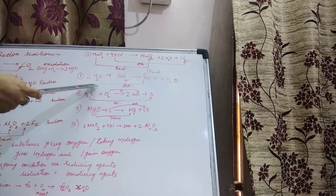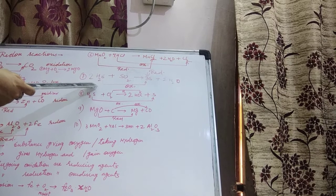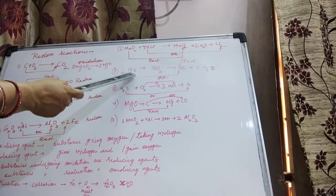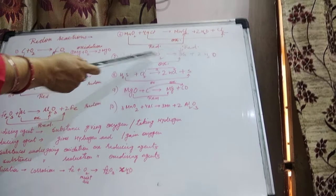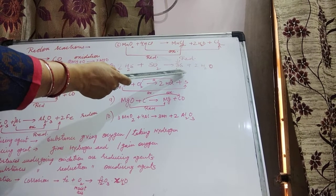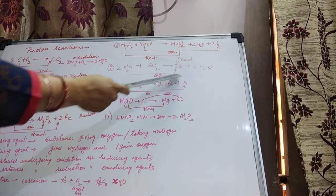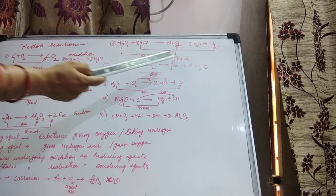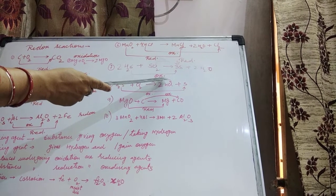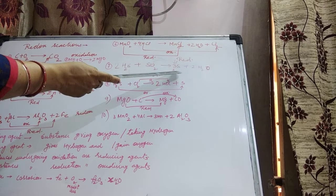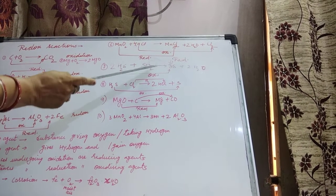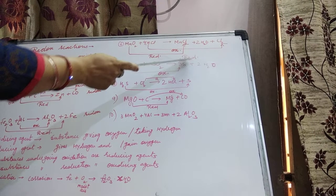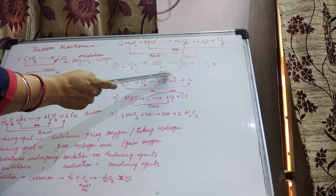If you are still not clear about Redox, you can ask me. Next: H₂S reacting with SO₂ gives Sulfur and Water. H₂S is converted into Sulfur — Hydrogen is getting removed — removal of Hydrogen is Oxidation. SO₂ is converted into S — Oxygen is getting removed — removal of Oxygen is Reduction. Both occur simultaneously, so the reaction is Redox.